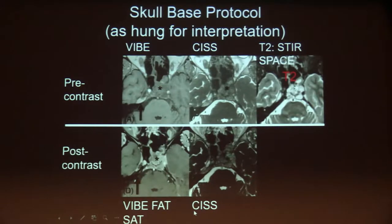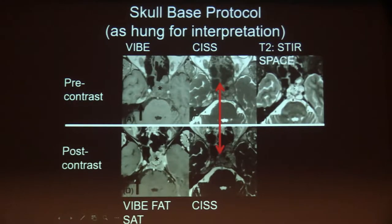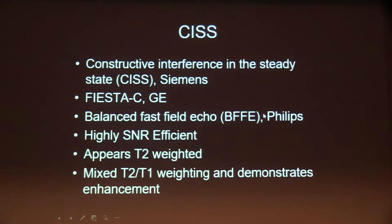We get our T2 appearance from the STIR SPACE imaging and enhancement on the VIBE post-contrast. This example is a chordoma — T1 hypointense, T2 hyperintense, and enhancing. But the key sequence, the meat of the protocol, is the CISS imaging, comparing pre- and post-contrast.